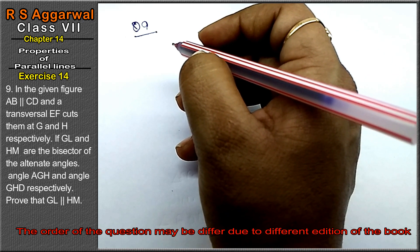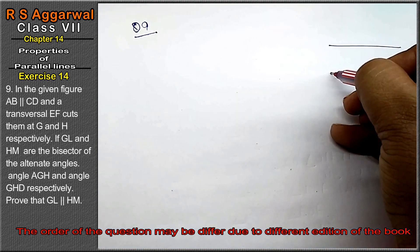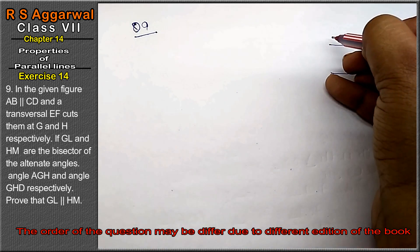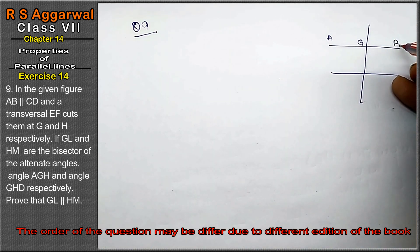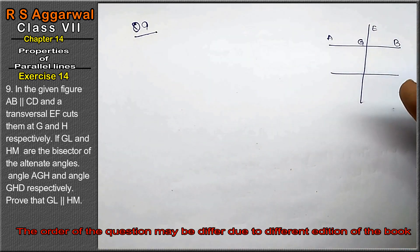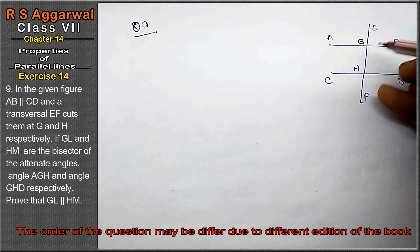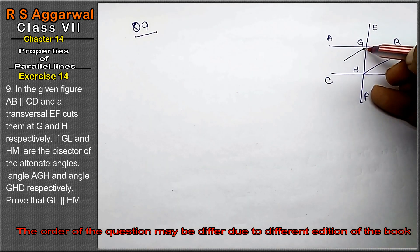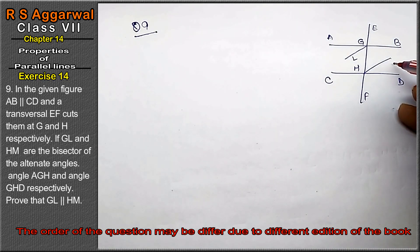Question number 9 is in a given figure. First we will draw the figure. Points A, G, V, E, C, D, H, F. This line is L and this line is M.